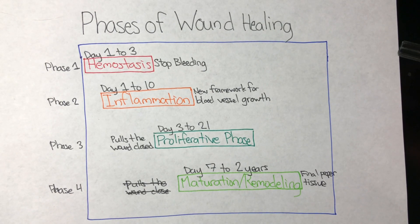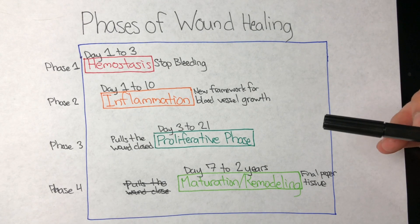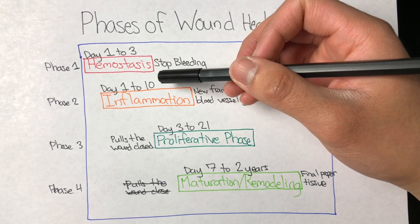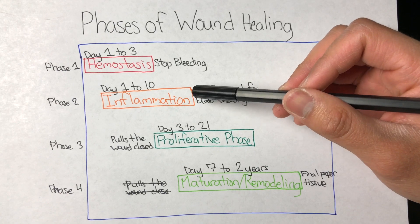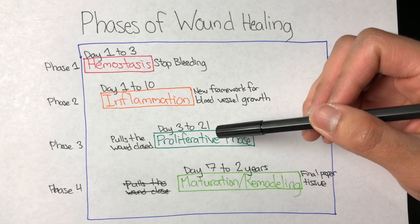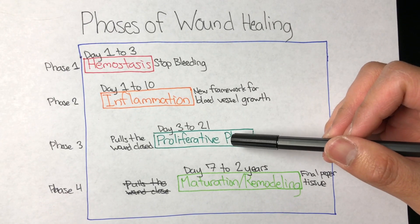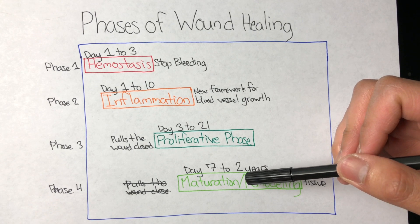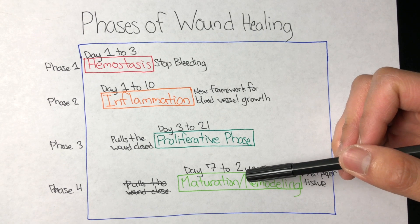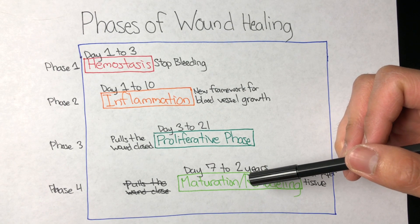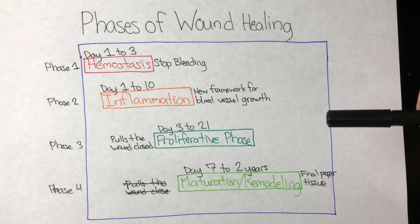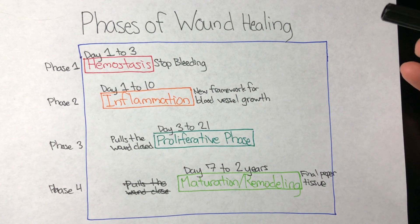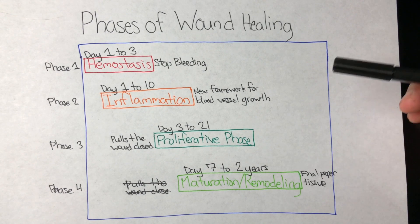It's important to keep in mind that phases of normal wound healing can and do overlap sometimes. For example, the hemostasis and inflammation phases overlap, then the inflammatory and proliferative phases overlap, and the proliferative and maturation phases certainly also do overlap. In addition, these time frames are not definite because normal wound healing is very tissue dependent.